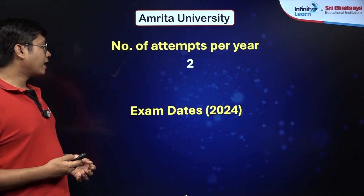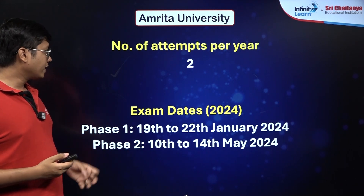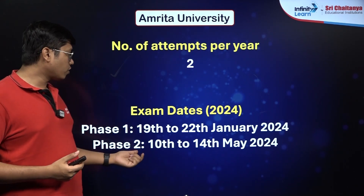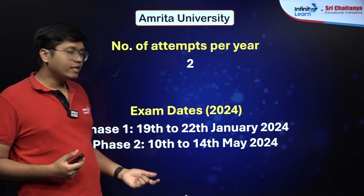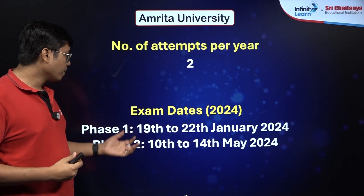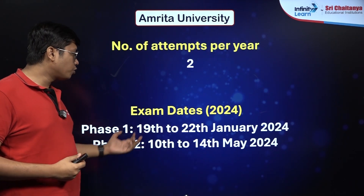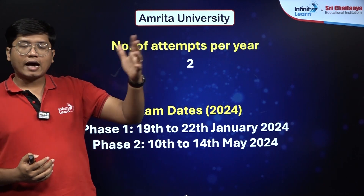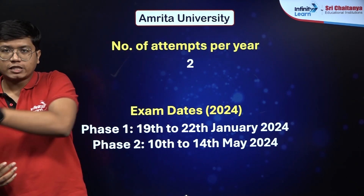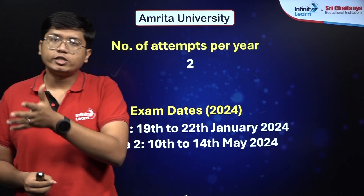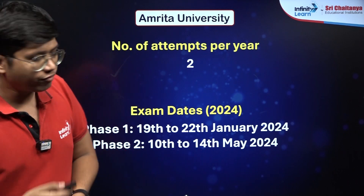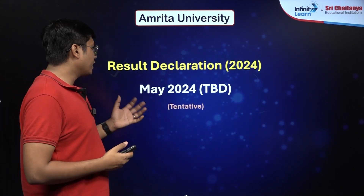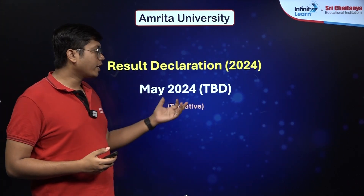You have 2 attempts per year. For 2024, Phase 1 is from the 19th to the 22nd of January and Phase 2 is from the 10th to the 14th of May — one in January and one after your JEE Main 2nd attempt in May. Result declaration is also in May 2024.